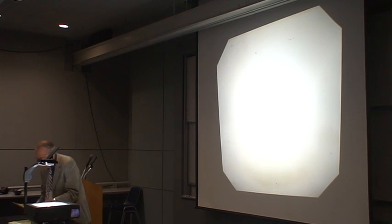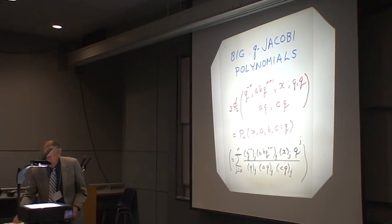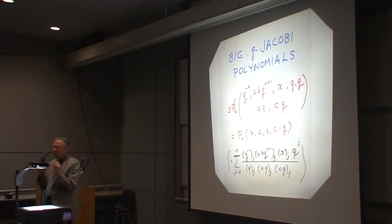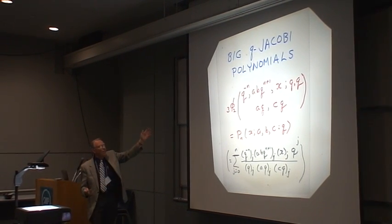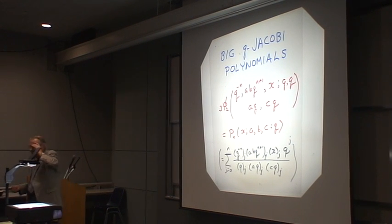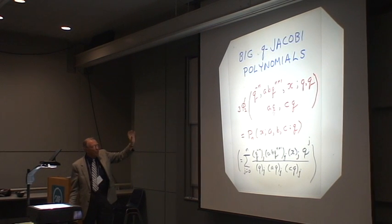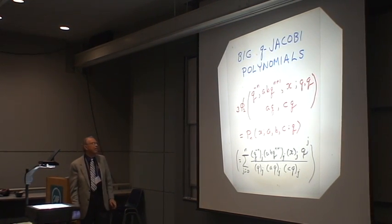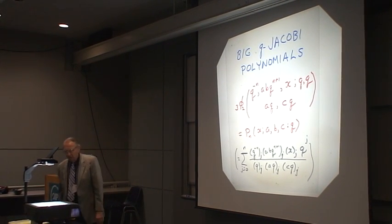Let me remind you of some of them. There are obviously what are called the big q-Jacoby polynomials. That's called big because there are also little q-Jacoby polynomials. In some sense, in terms of a q-hypergeometric function sense, these are the fully general terminating 3 phi 2s, and they have this formulation.